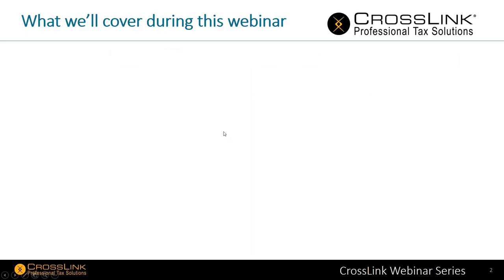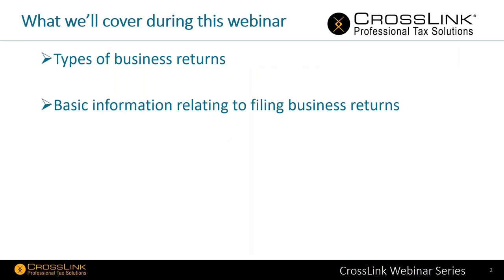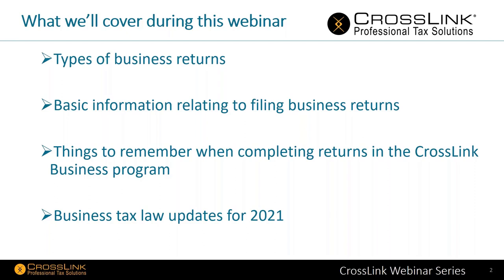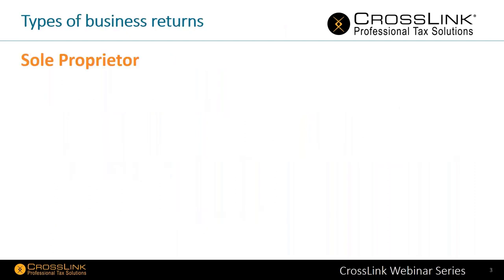To take you through completing business returns in CrossLink, we'll cover the following: the types of business returns, some basic information relating to filing business returns regardless of what software you use, things to remember when completing returns within our program, and finally some business tax law updates for 2021 — new forms available, extender provisions, and changes made to them. Over the next 40 to 45 minutes these are the things we'll cover.